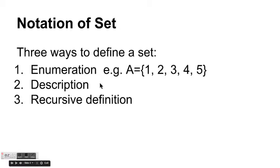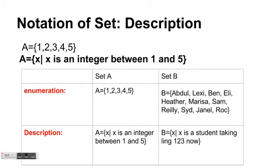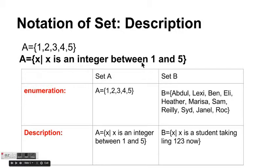There are three ways to define a set: enumeration, description, and recursive definition. For description, we have the name of the set, an equal sign, and a pair of curly brackets. Inside we have a placeholder variable X, then a vertical bar, then a description of the variable — for example, X | X is an integer between one and five. This denotes the same set as the enumeration.